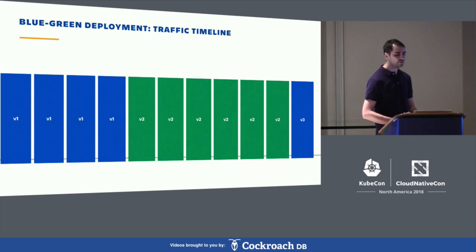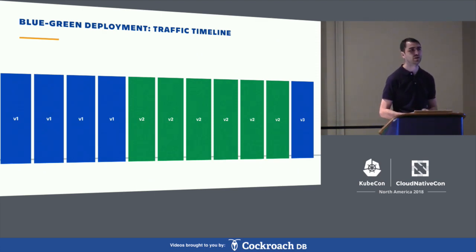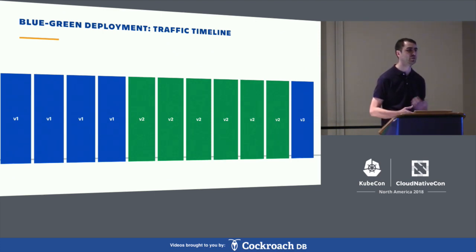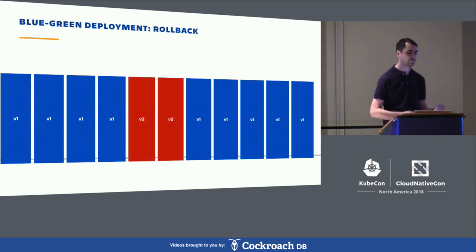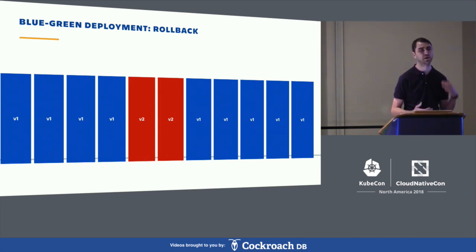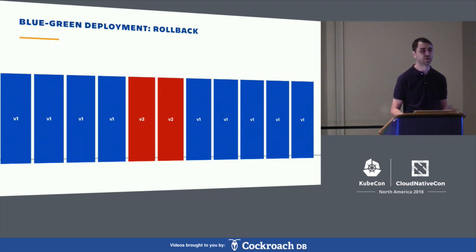The traffic timeline for blue-green deployment shows that the cutover is instantaneous, because we only update the pod selector once the deployment is ready and scaled up with the new pods. In case of a bad release, rollback is also instantaneous — since we keep the old deployment running, we can quickly roll back once we detect the issue.